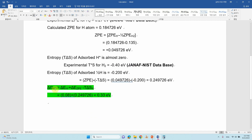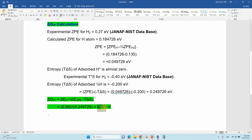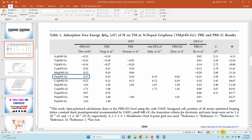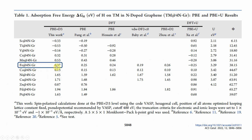You substitute delta E (0.08 eV) and the correction term (0.249726 eV) into the delta GH formula to get the hydrogen adsorption free energy. Now we compare this energy with the reported paper. For the FeN4 graphene system, the paper reports delta GH of 0.37 eV, while our calculation gives 0.33 eV. These are very close — the small difference is due to slightly different computational methods, which is not a significant problem.